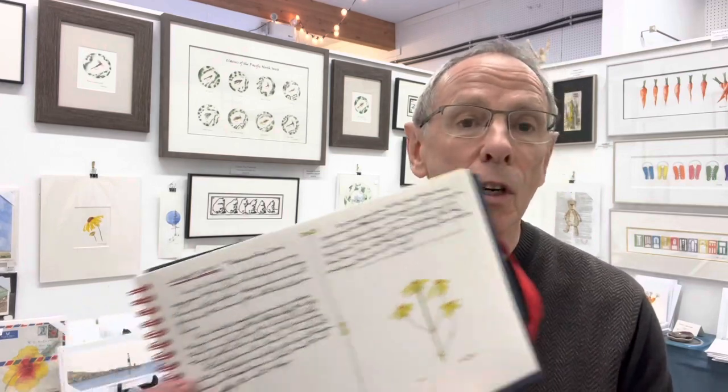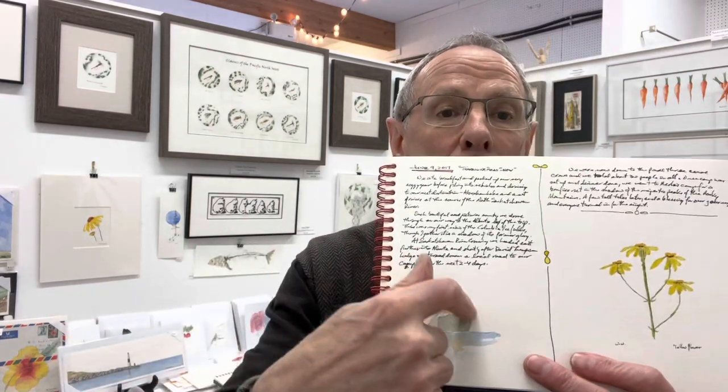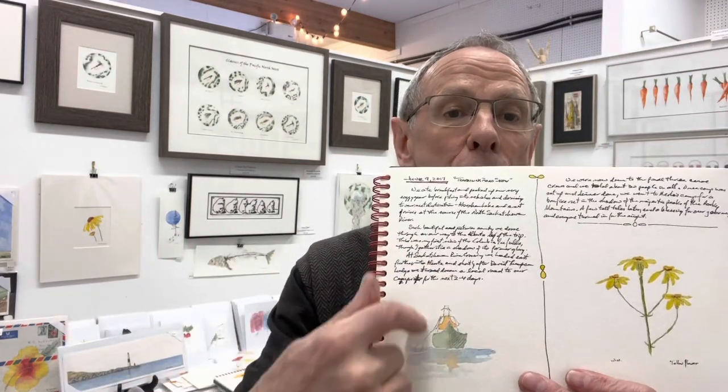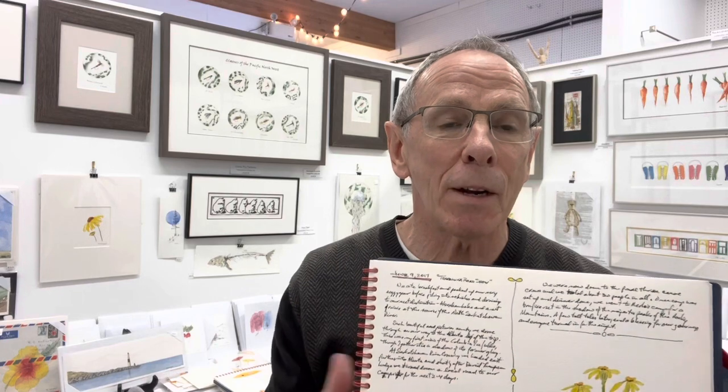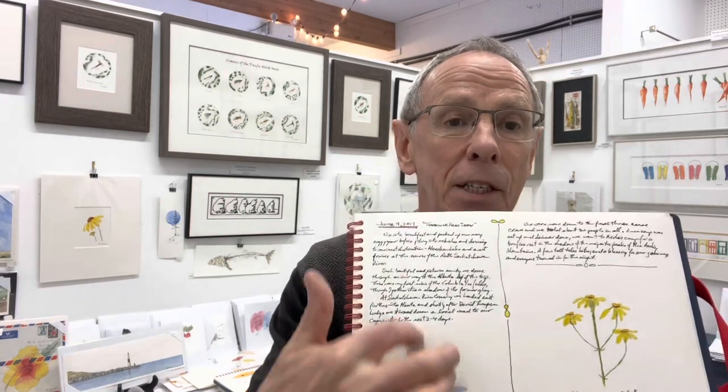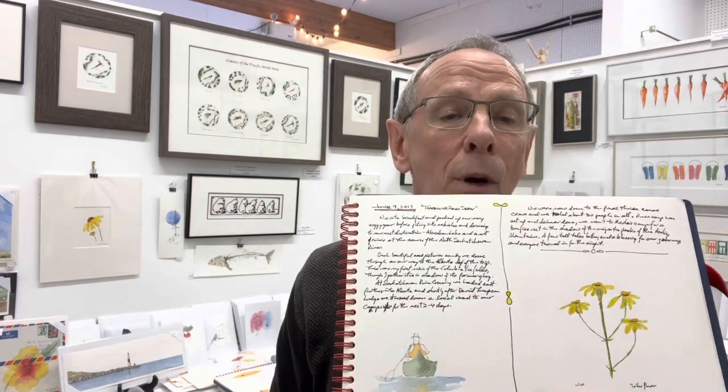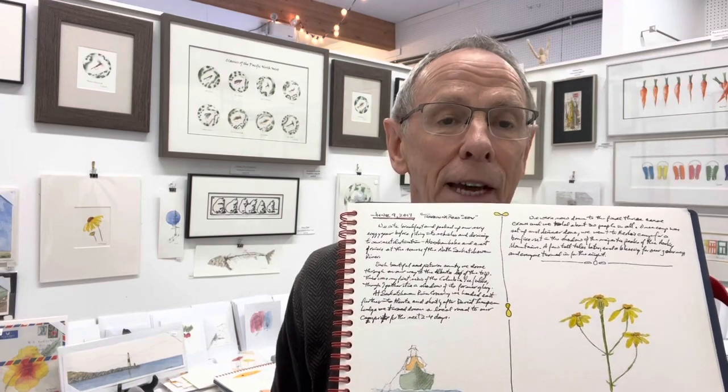This is a paddle trip that we took across Canada. I'm going to take this little stern view of a canoe and show you how we can put that into a long vertical format for a bookmark. I made up a set of these and passed them out to our travel companions on that trip.